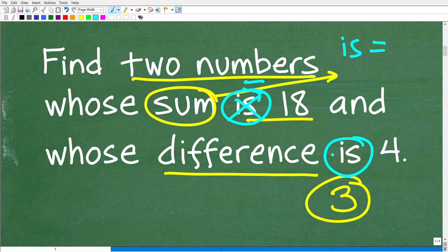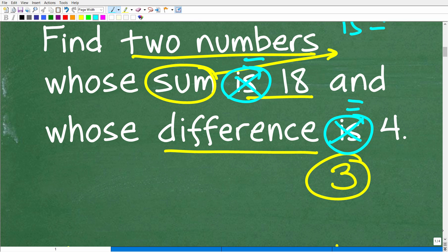All right. So the first thing is that we are dealing with a math word problem. And you always want to use the rule of three, which is to read the problem at least three times before you do anything, before you start taking any action. So here, we know that we're looking for two numbers. That's the question. Find two numbers. All right. So two numbers, we're thinking about two unknown values.